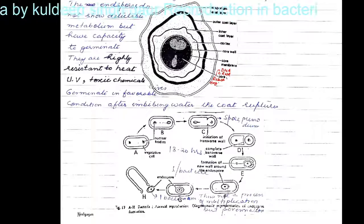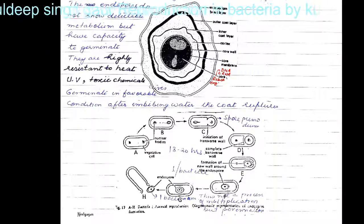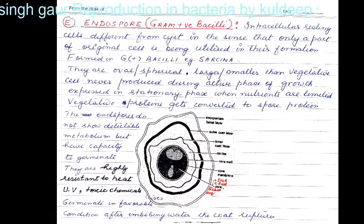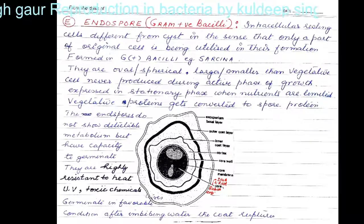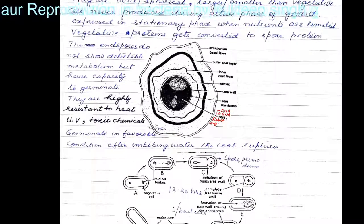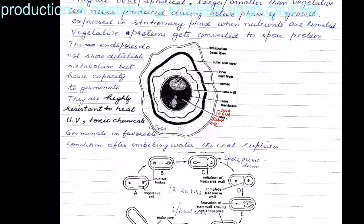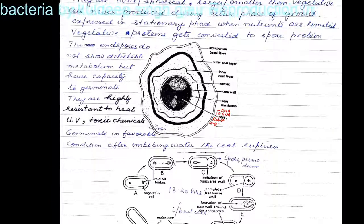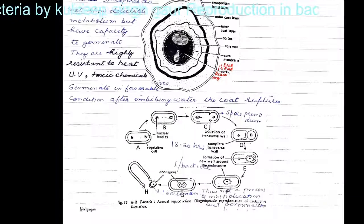Dear students, this is all about asexual reproduction in bacteria. In the upcoming lecture we will take up the sexual mode of reproduction in bacteria. It is not the truest form of reproduction in bacteria; rather it is a method of recombination. We have three procedures which we will study in the ensuing lectures, such as transduction, transformation, etc. Thank you very much.